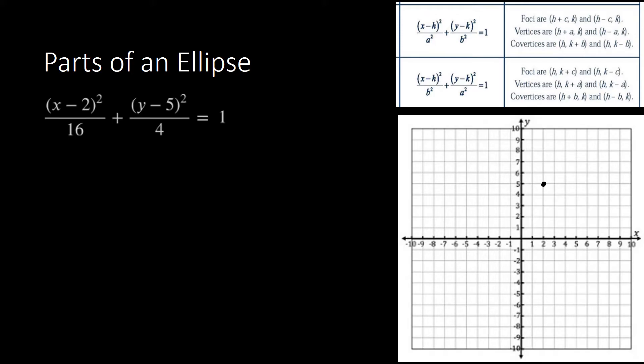Using those formulas we can identify our co-vertices and foci. First, let's identify our center, then a, b, and c — the needed information for identifying the different parts of our ellipse. Looking at our example, we have (x minus 2) squared. Since 16 is bigger than 4, the denominator under x minus 2 squared is larger, so this is a horizontal orientation.